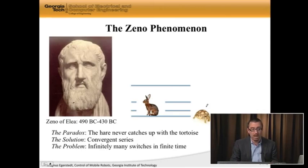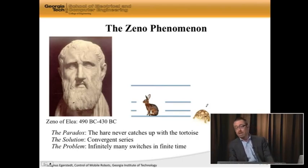But the problem for us is that if I model this as a hybrid system, I have, again, infinitely many switches in finite time. So this is why this kind of infinitely many switches is called the Zeno phenomenon, because it can be traced back to Zeno's many paradoxes about motion.